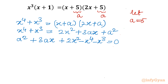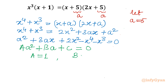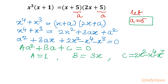Now I will treat this as a quadratic equation in a, in the form a² + ba + c = 0. We will apply the Sridharacharya formula to evaluate a. So: A = 1, B = 3x (since x is treated as a constant in this quadratic), and C = 2x² − x⁴ − x³. Remember that a equals 5.